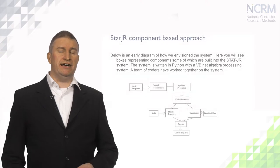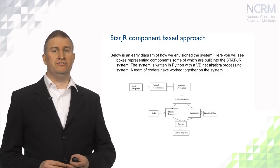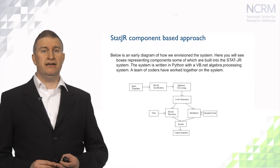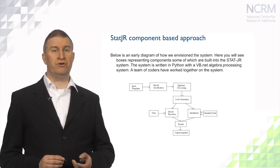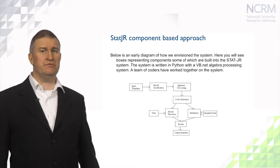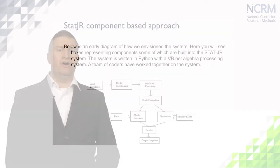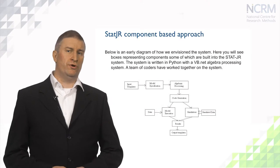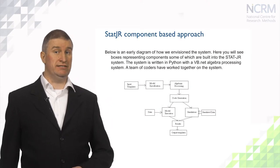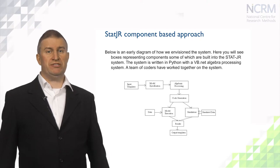Stature was designed as a set of components that interlink to create a complete software package. The system has its own algebraic processor which can be used to construct algorithms for model fitting. As you'll see in this diagram, there are templates — which we will say more about later — that take user input and use it to specify a statistical model. This model is then fed through an algebra system and programming code is produced. This code can be combined with data to execute a model and/or to perform simulations with simulated data. Results are produced which can then be presented in many different ways.